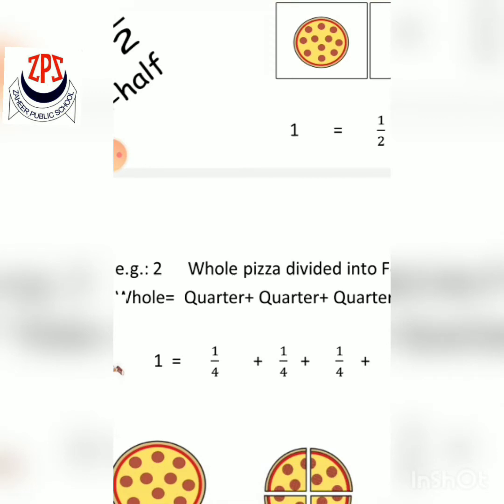Next example: a whole pizza divided into four equal parts. Each part is called a quarter. You write it in fraction as one upon four.